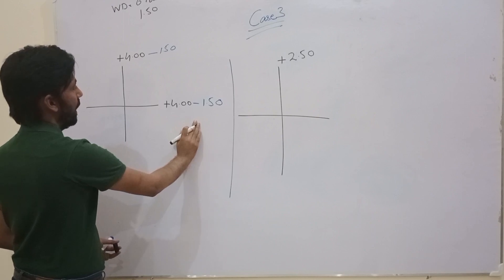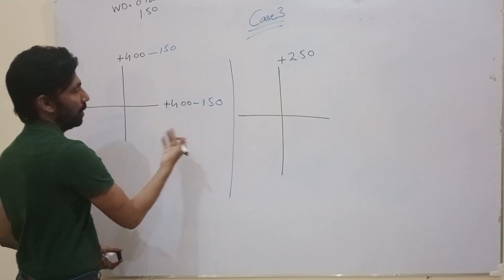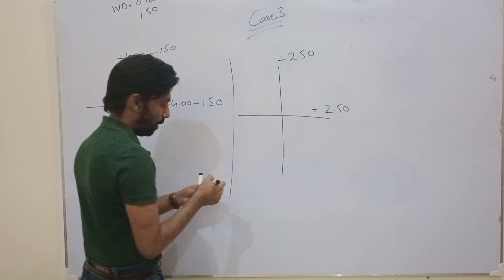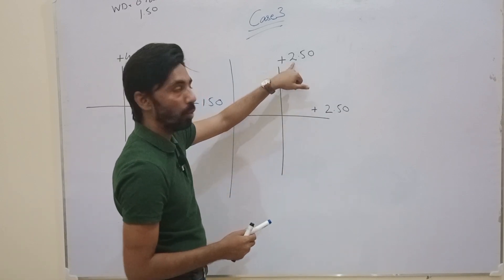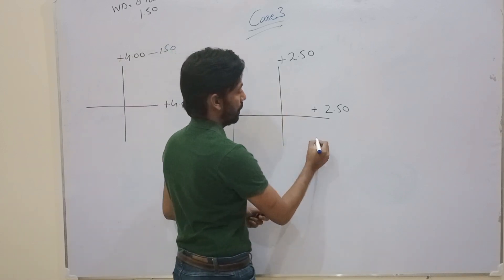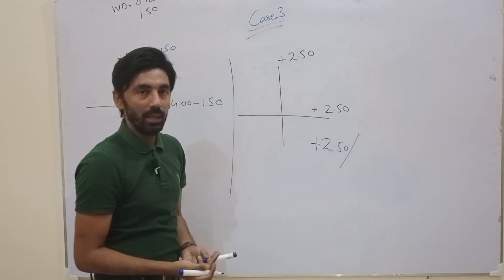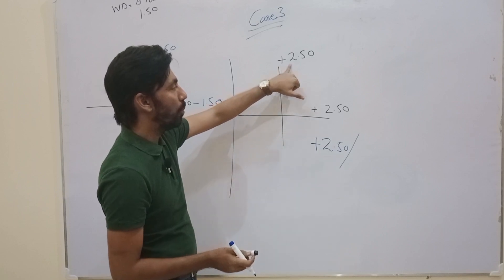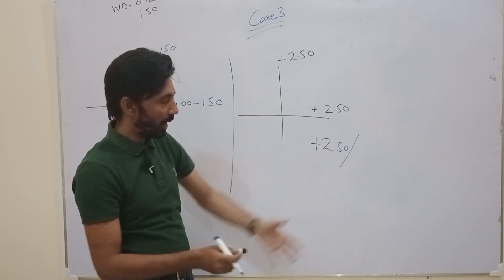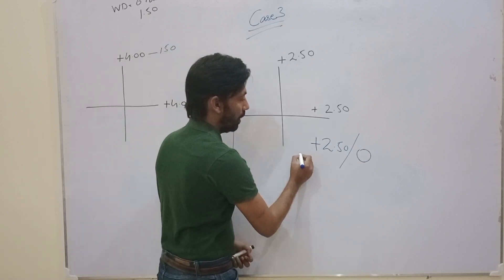If we deduct 1.5 from +4, the value is the same: +2.5, with the same plus sign. You can choose either +2.5 as your sphere. Suppose I choose +2.5 as my sphere. To find the cylinder, we move from +2.5 to +2.5 — the gap is zero, so our cylinder is zero.